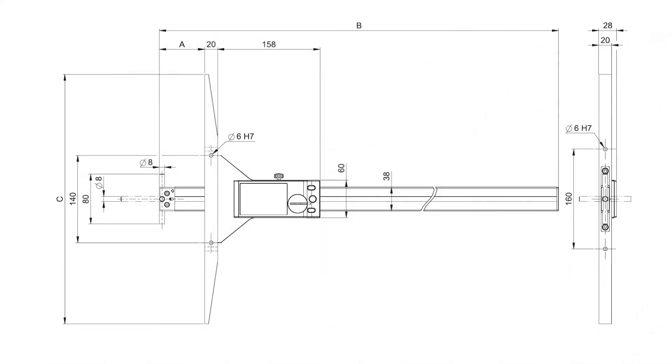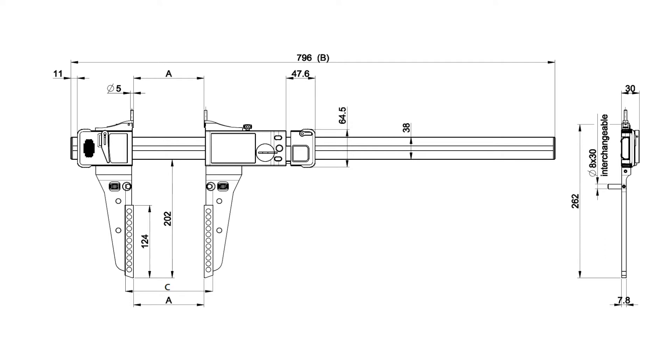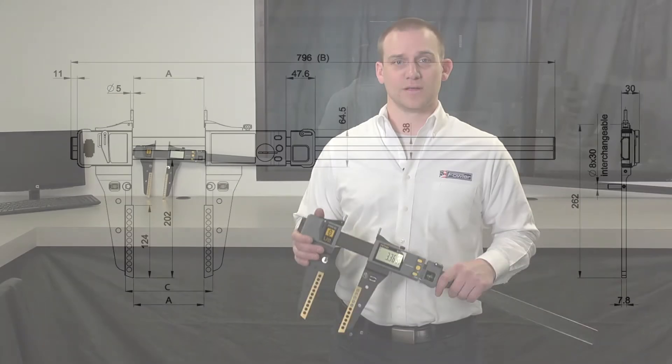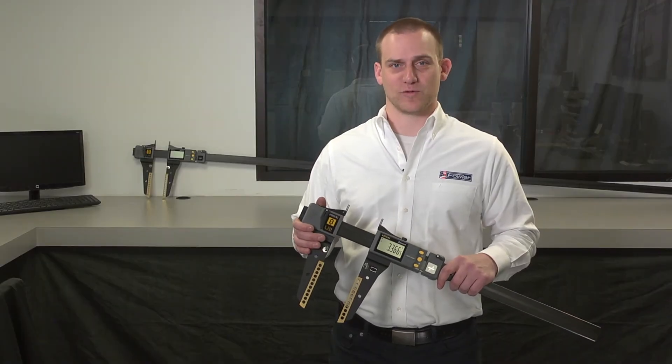A depth gauge configuration is available. It is also available as a stand-alone scale, the Fowler Ultralight 4 large format caliper.